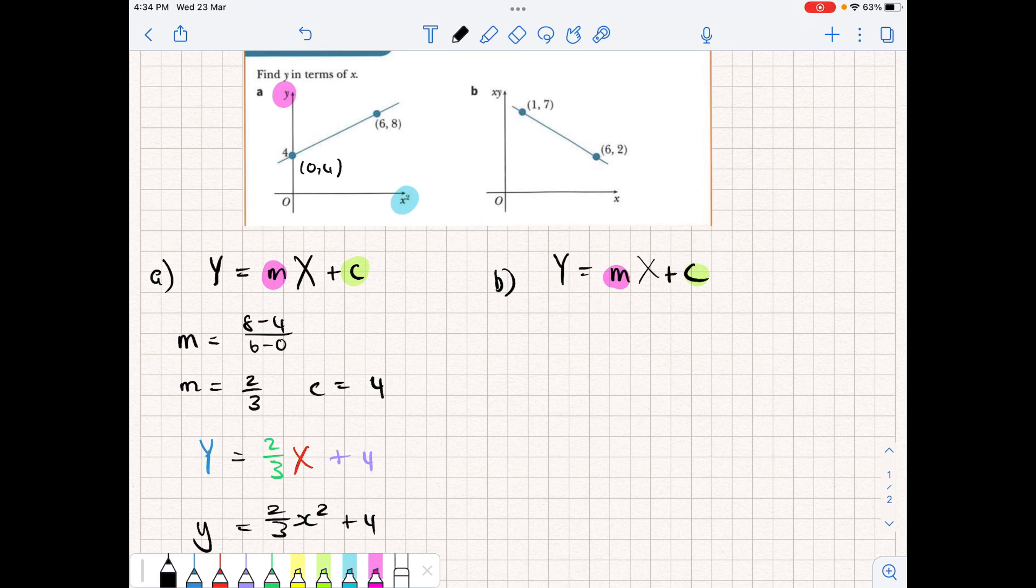So the gradient will do the same way. The gradient is change in y over change in x. So we can call this point 1 and point 2. So we're going to have 2 minus 7 all over 6 minus 1. And that's going to give us a gradient of -5 over 5, so minus 1.